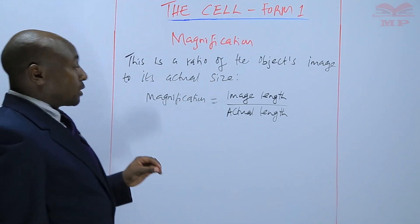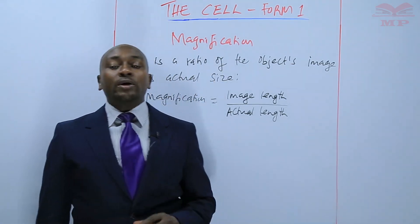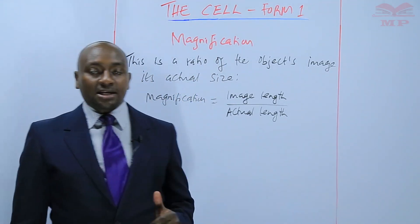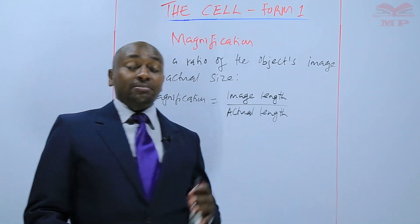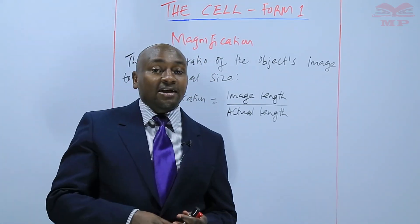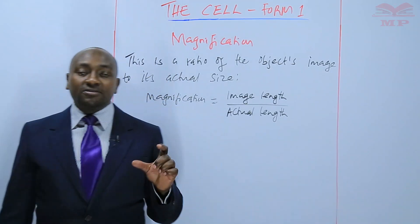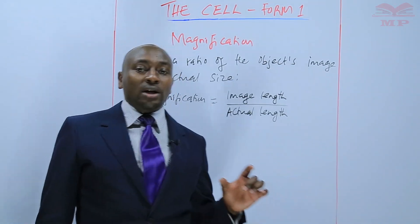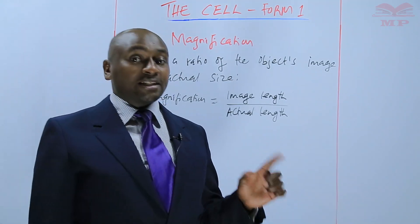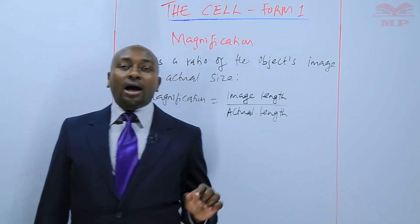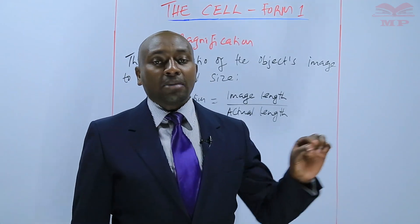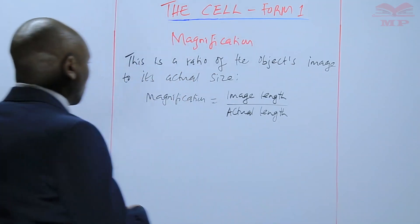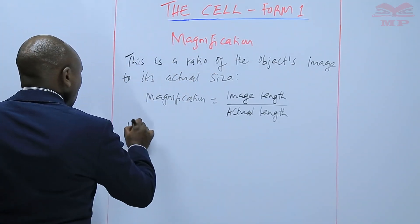But for now, I want us to look at magnification when we are using a light microscope, because basically that's what we are discussing today. The light microscope has two lenses: there is the eyepiece and there is the objective lens, and those two lenses have a particular magnification. So to get the total magnification, you multiply the eyepiece magnification with the objective lens magnification.